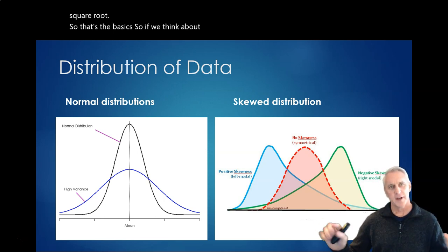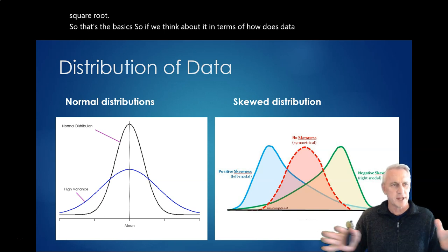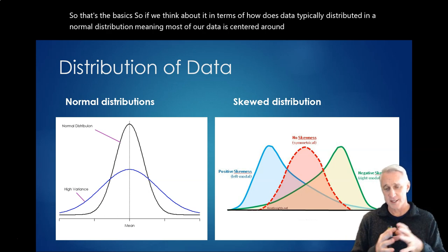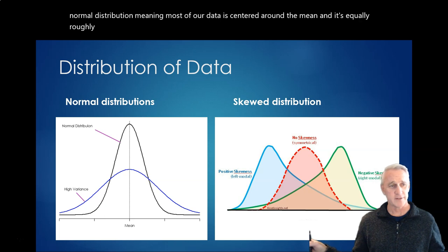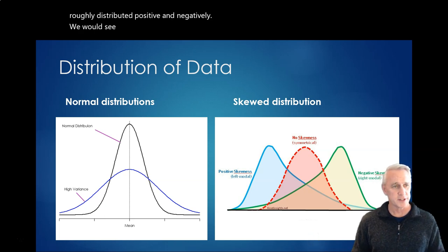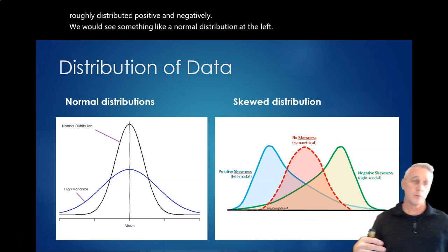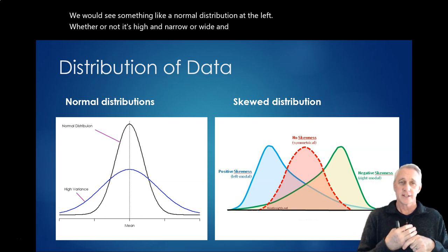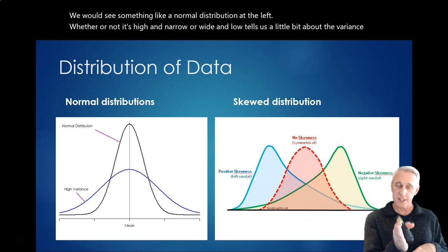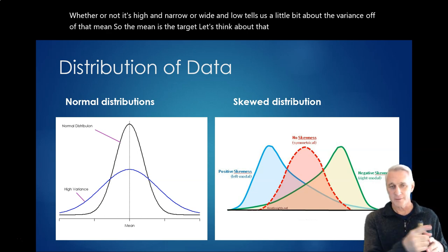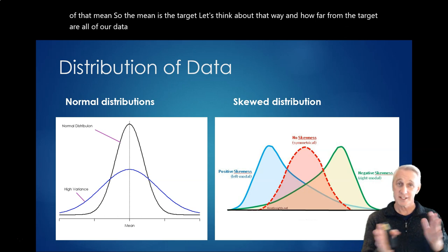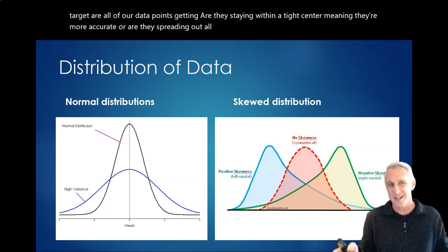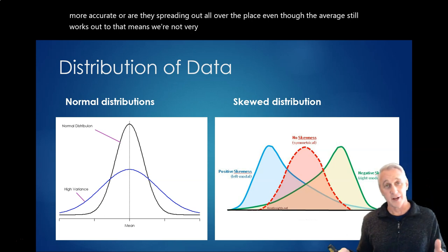So, if we think about it in terms of how is data typically distributed, in a normal distribution, meaning most of our data is centered around the mean, and it's equally roughly distributed, positive and negatively, we would see something like a normal distribution at the left. Now, whether or not it's high and narrow or wide and low tells us a little bit about the variance off of that mean. So, the mean is the target. Let's think about it that way. And how far from the target are all of our data points getting? Are they staying within a tight center, meaning they're more accurate? Or are they spreading out all over the place, even though the average still works out to that? That means that we're not very precise and we're not very accurate.